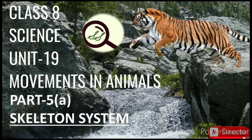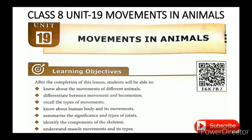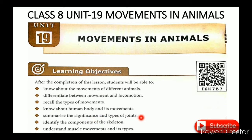Welcome, students. Class 8 Science, Unit 19: Movements in Animals, Part 5a — Skeleton System. The learning objectives are: know about the movements of different animals, differentiate between movement and locomotion, recall the types of movements, know about the human body and its movement, summarize the significance and types of joints, identify the components of the skeleton, and understand muscle movements and its types.